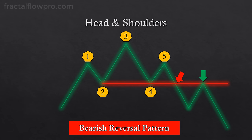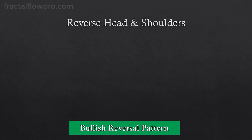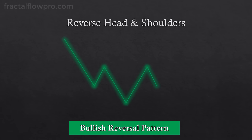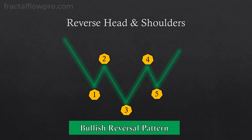Next in line we have the reverse head and shoulders pattern, which works in a similar way to the standard head and shoulders. But the reverse version is a bullish reversal pattern, while the standard version is a bearish reversal pattern. The reverse head and shoulders pattern has the same configuration as the standard, but the pattern is upside down. We have a lower low followed by a higher low. The logic behind that is that sellers were able to create a low in number 3, but as they tried to create a lower low in number 5, they failed.